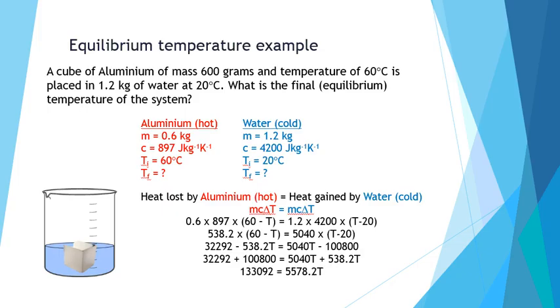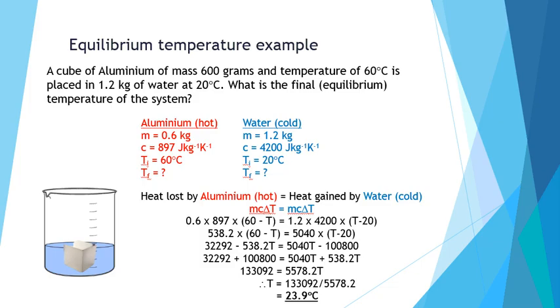All we need to do now is divide both sides by 5578.2 to work out what we have for our value T. And finally our answer: the common equilibrium temperature when we add the aluminum and the water together, for this particular mass and initial starting temperatures, is a temperature of 23.9 degrees Celsius.